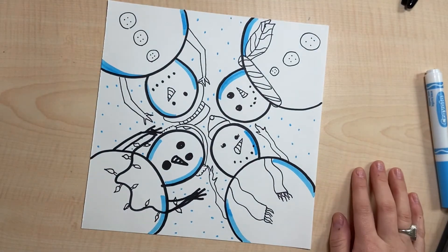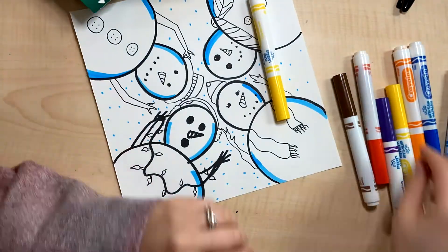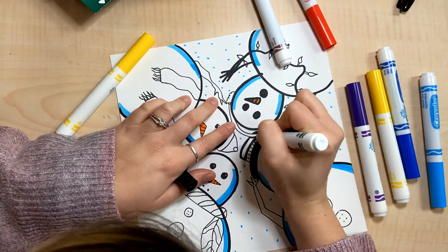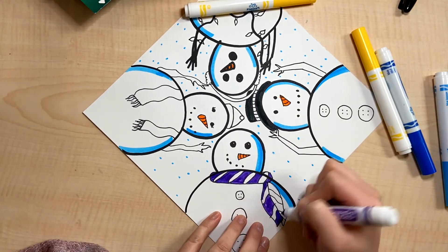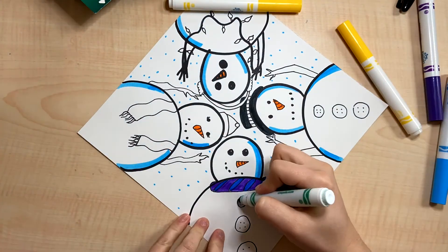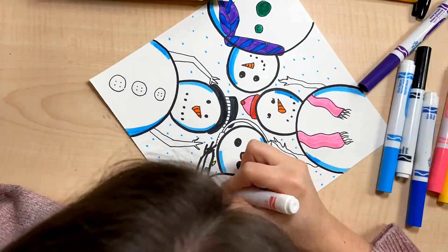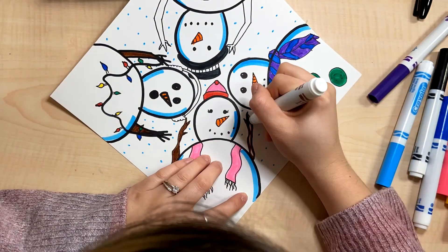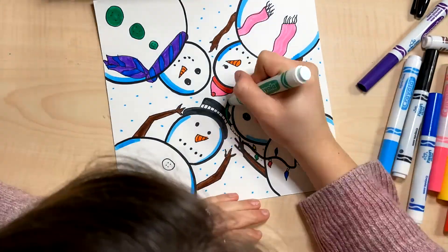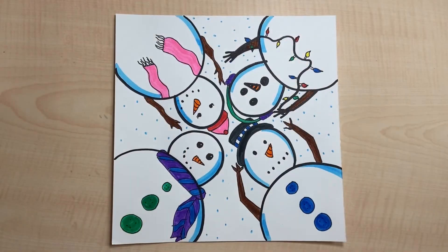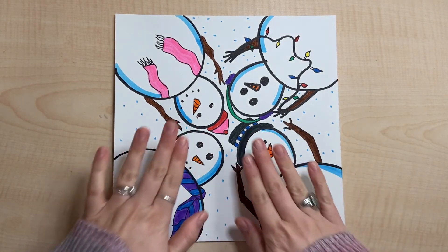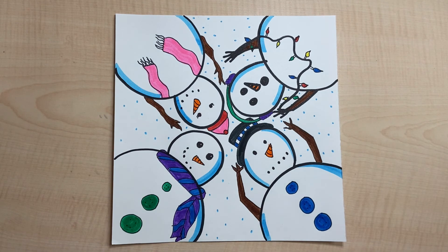I'm gonna put it on time lapse so we're not spending so long watching me color. My snow people are done and it really does look like an optical illusion where I'm looking up at my snow people and I'm laying on the ground. I hope you enjoyed drawing these snow people with me from this interesting perspective, and I hope we get some snow this year. I'll see you guys next time, bye.